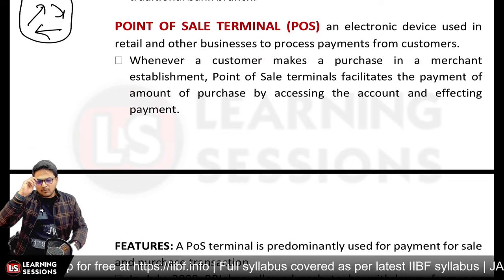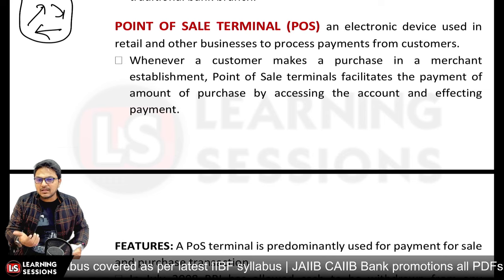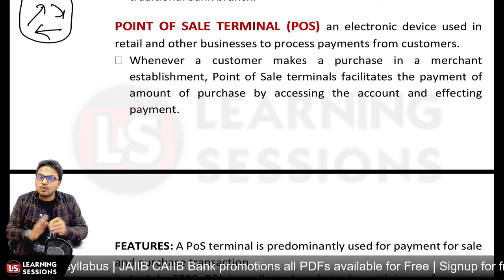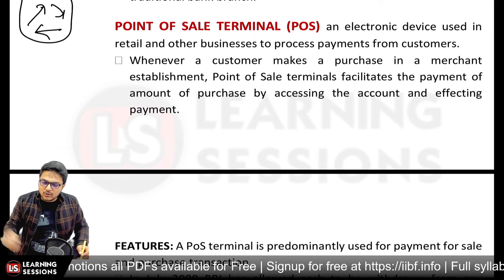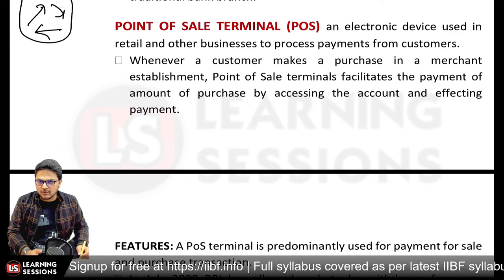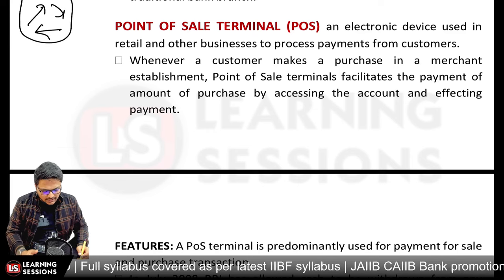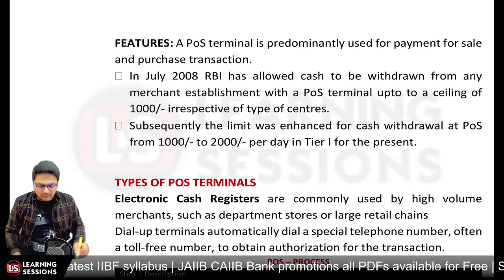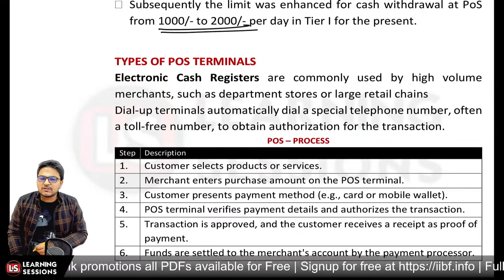Point of Sale (POS) machines are electronic machines you see at petrol pumps or supermarkets — both portable machines and machines connected to a PC. You swipe or insert your card, enter your PIN, the transaction is authenticated, and the transaction is completed. The Government of India allowed cash withdrawal from POS in 2008. The current limit is enhanced from ₹1,000 to ₹2,000 per day for Tier 1 cities.